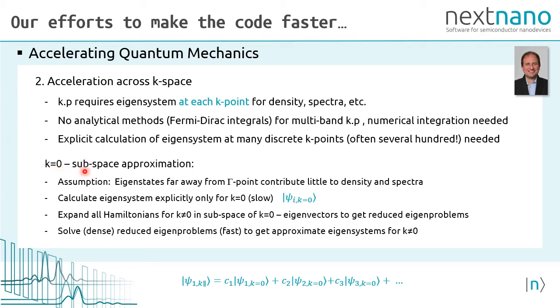We assume that the eigenstates far away from the gamma point contribute only little to the density and the spectra. So we calculate the eigensystem explicitly only for the gamma point. Then, we expand all Hamiltonians for the non-zero k vectors in the subspace of the wave functions that we obtained at the gamma point. Then, we have a reduced eigenvalue problem which can be solved much faster to get the wave functions at the non-zero k vectors using the wave functions at the gamma point.